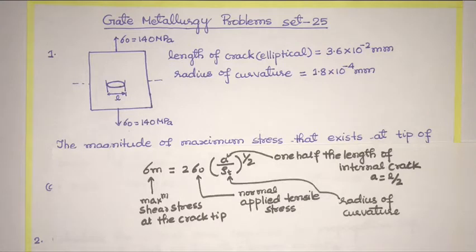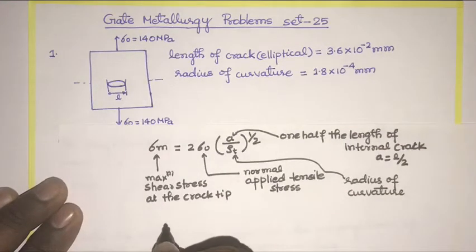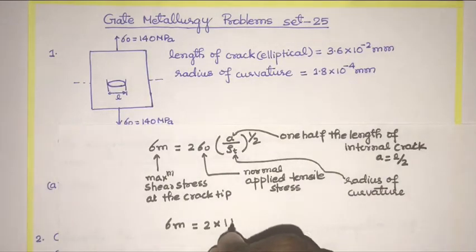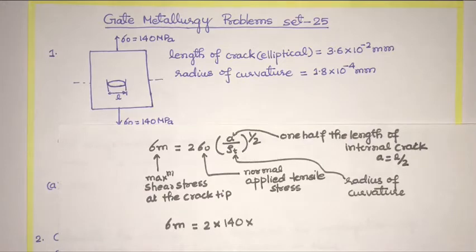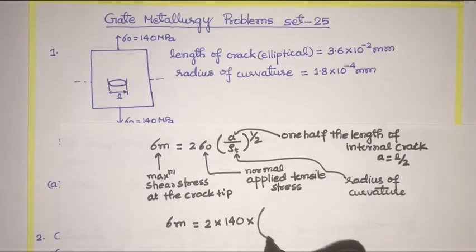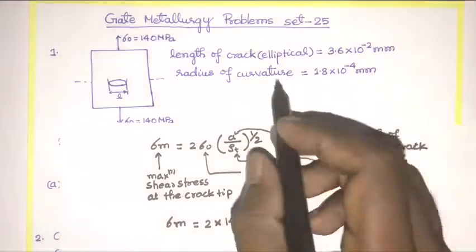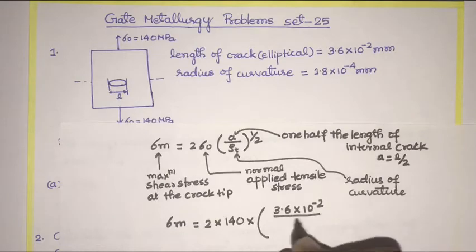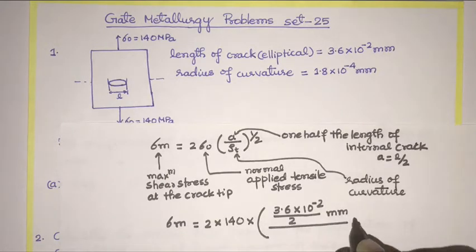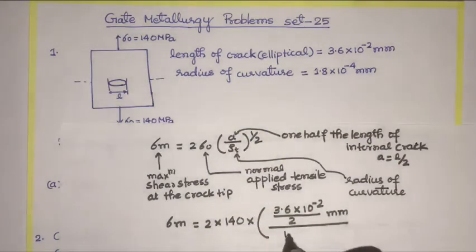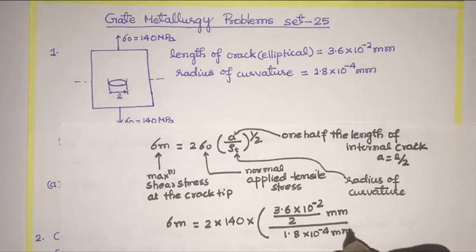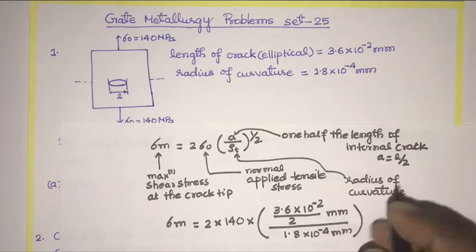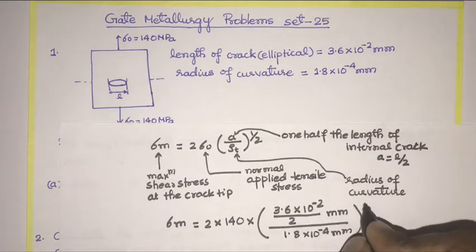We have been given the values of all these variables. We have to find σm. So σm = 2 × σ₀, where σ₀ is 140 MPa. The value of A is L/2, and the length of the crack is 3.6 × 10⁻² mm divided by 2. The radius of curvature is 1.8 × 10⁻⁴ mm. Since both are in millimeters, the units simply cancel out, and this is raised to the power 1/2.